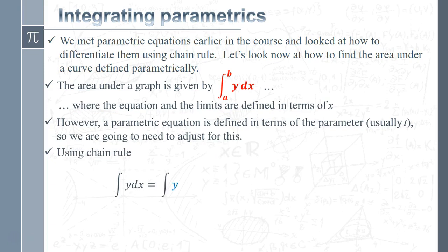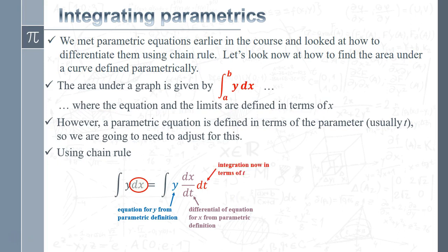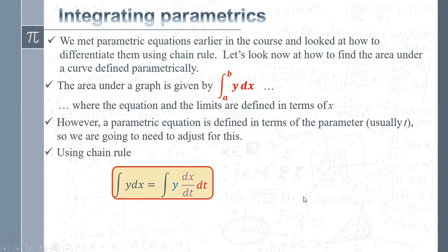What we're going to do is take the integral of y and change the dx — the 'with respect to x' part — so it says 'with respect to t'. Using chain rule, we write dx as (dx/dt)·dt. So dx/dt times dt is the same as just dx. The standard result is: y comes from the parametric definition for y, we differentiate the parametric definition for x to get dx/dt, and the limits originally in terms of x have to be expressed in terms of t. That is your standard result for integrating a parametric.